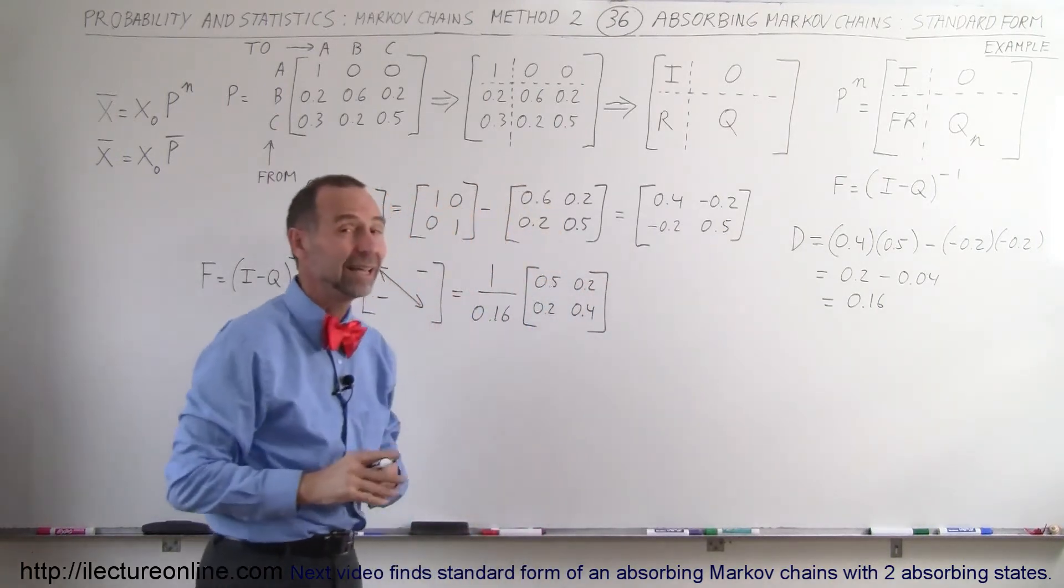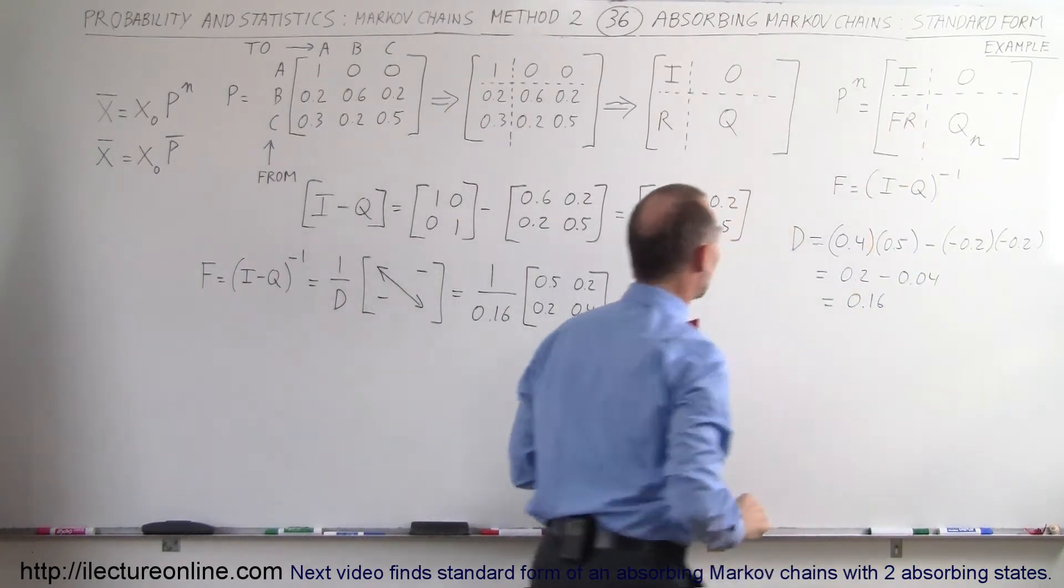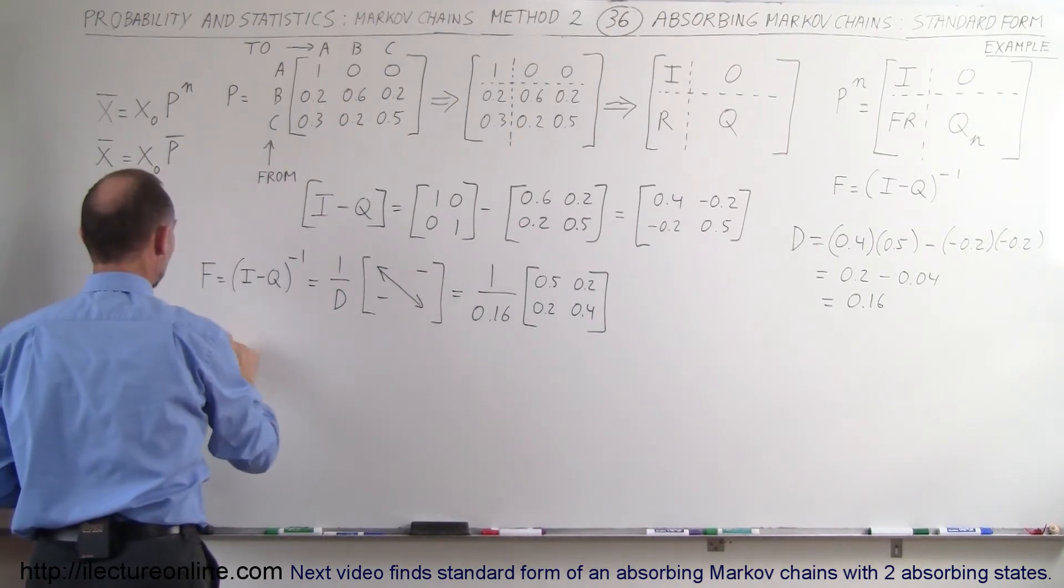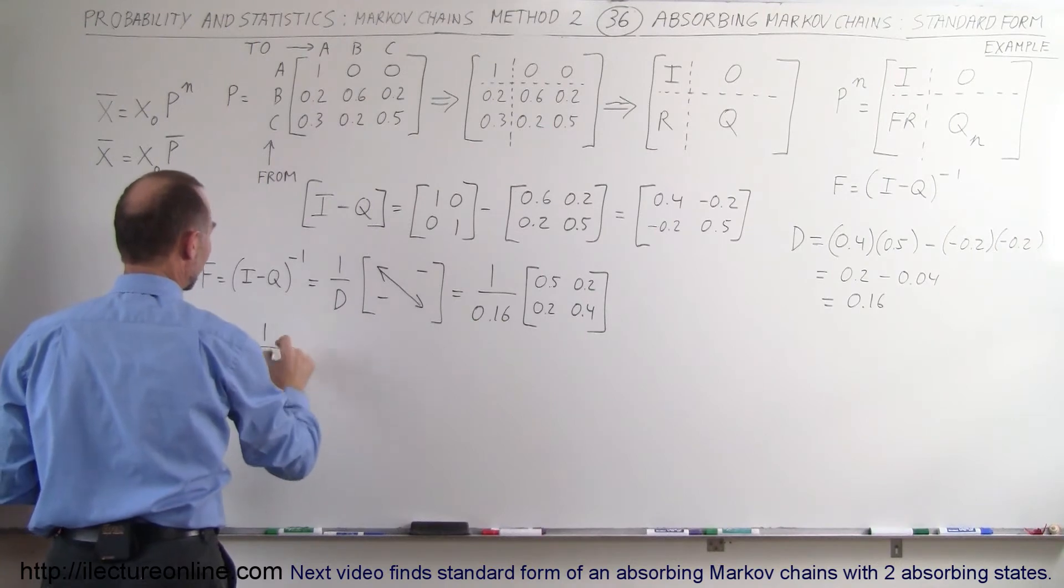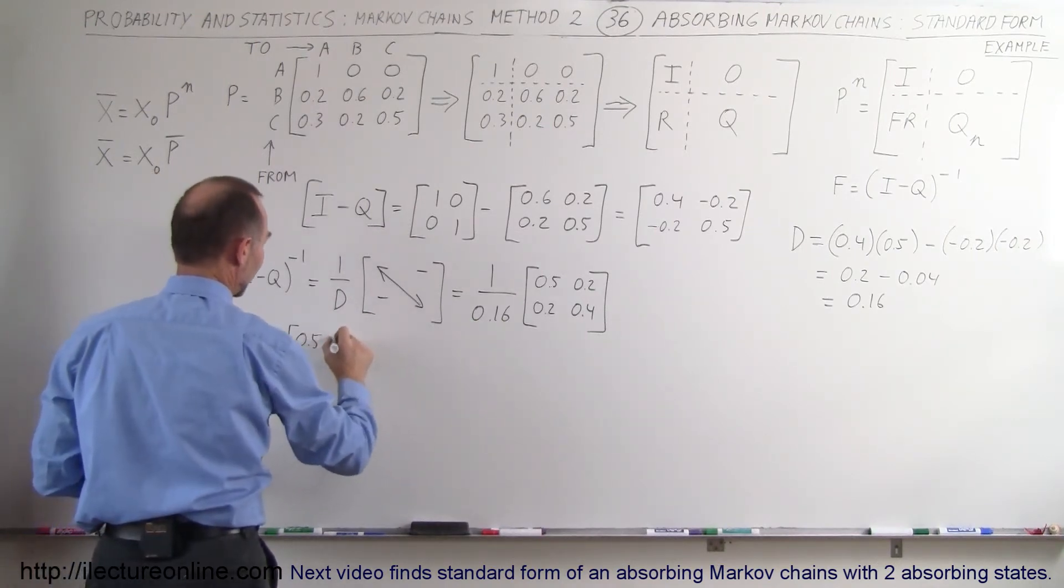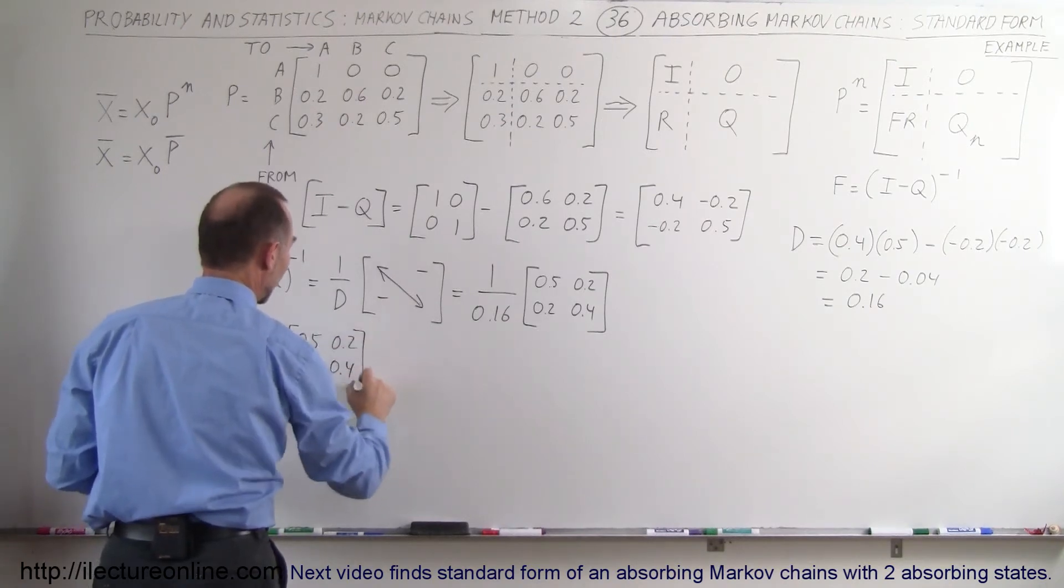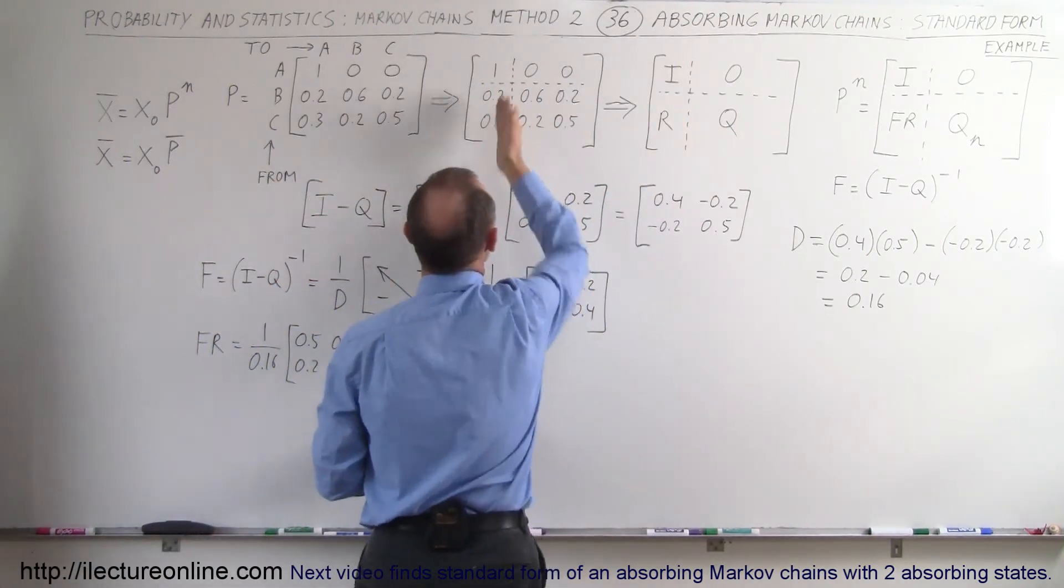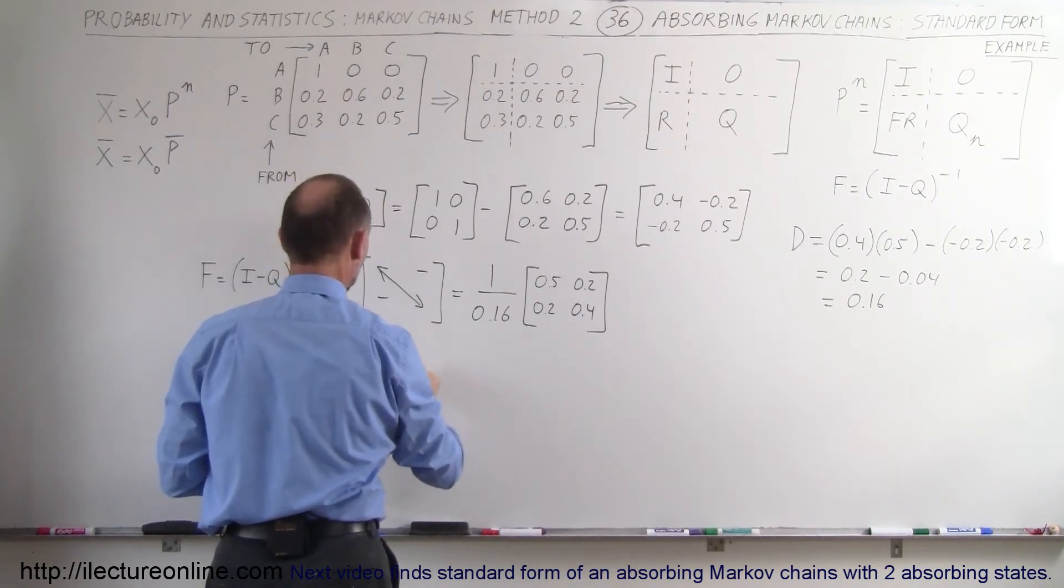Now finally what needs to go in here is the product of the fundamental matrix times the R matrix. So here we have F times R which is equal to 1 over 0.16, which is the determinant, times 0.5, 0.2, 0.2, 0.4, and then we multiply that times the R matrix. Notice the R matrix right here is this matrix right here which is 0.2 and 0.3.